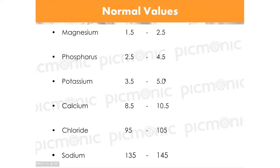We want to know the normal value range, the basic function, and how it affects body systems. So here's magnesium. Normal range is 1.5 to 2.5 — a relatively small extracellular volume compared to sodium at 135-145. The main function to think about is muscle relaxation.